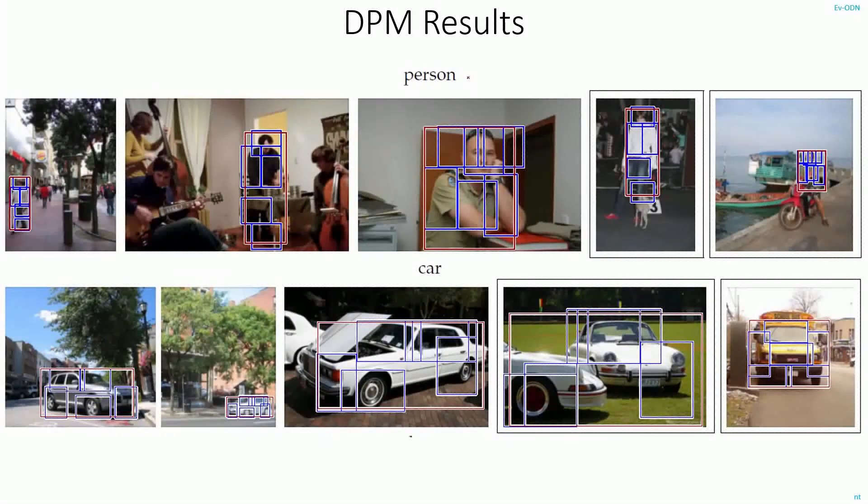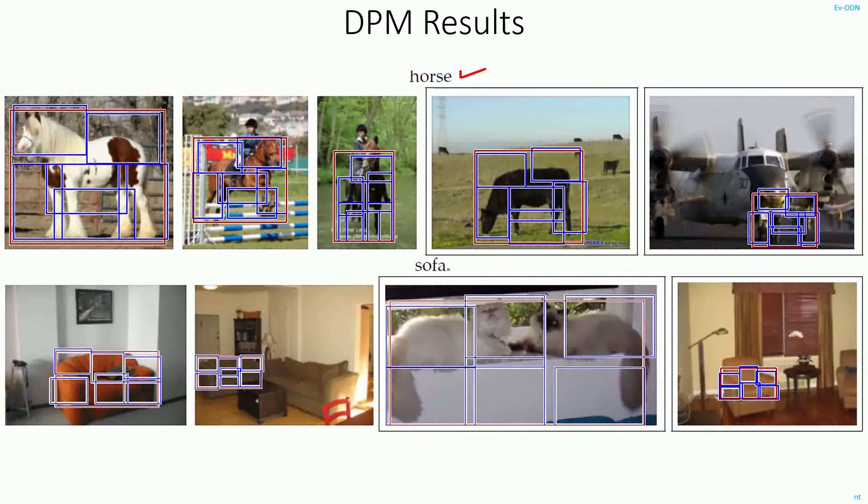These are some of the results of detection. This is for the person, car, then this for the horse, sofa.